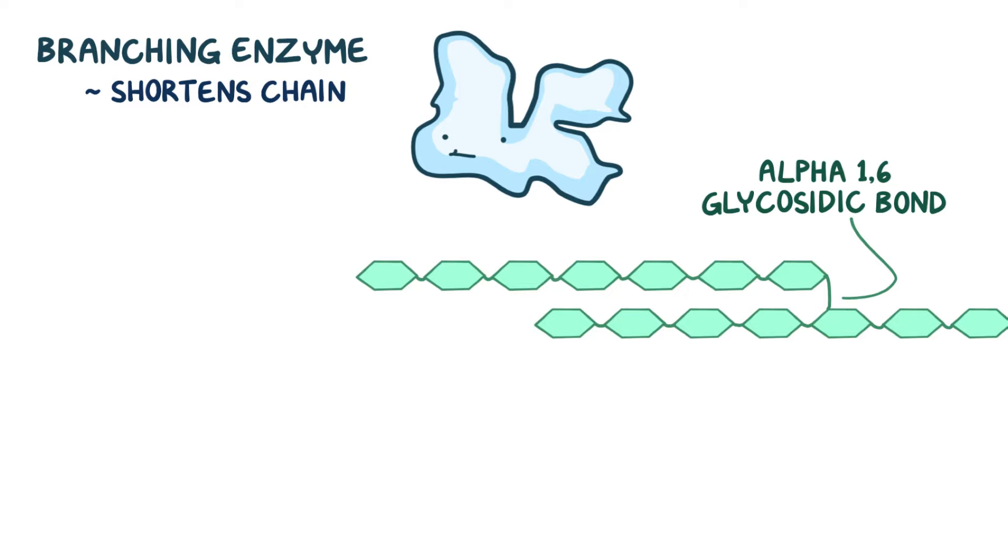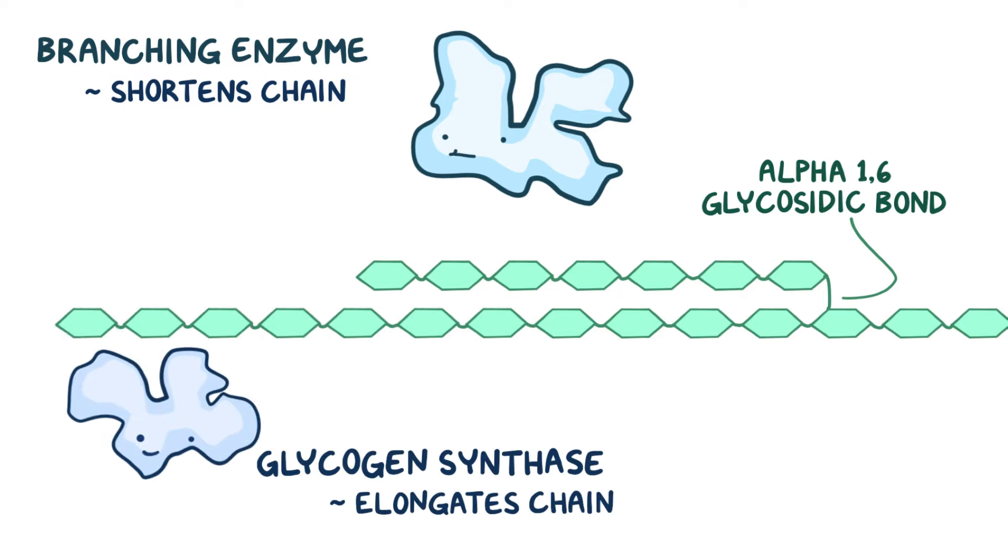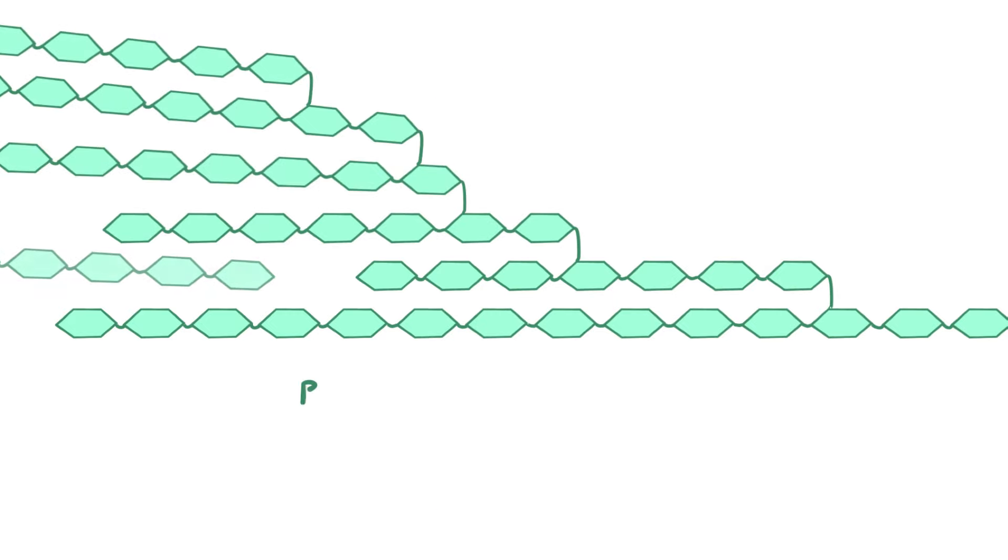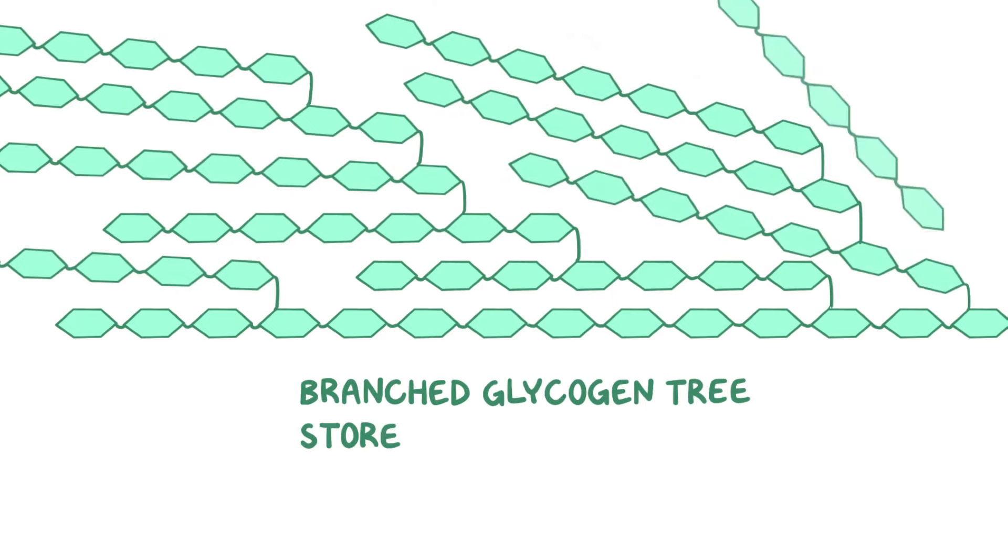And as soon as you've shortened the linear chain, glycogen synthase will elongate it once again. This happens over and over again, resulting in a branched glycogen tree to serve as stored energy.